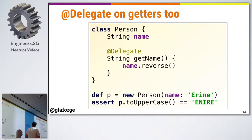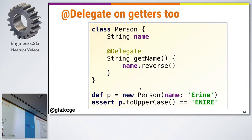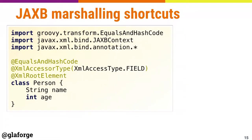Continuing on AST transformations: @Delegate is for doing delegation on properties of a class. Previously you could put @Delegate on a field like 'String name', but you couldn't put it on getters. Now you can delegate on getters, which allows special treatment — for example, when calling toUpperCase(), it delegates through the getter which returns the reversed name instead of the normal one.